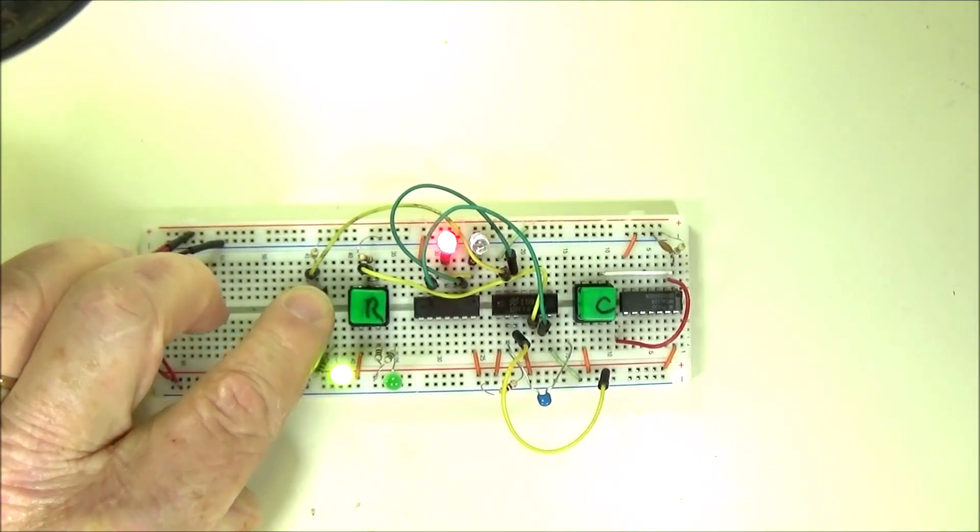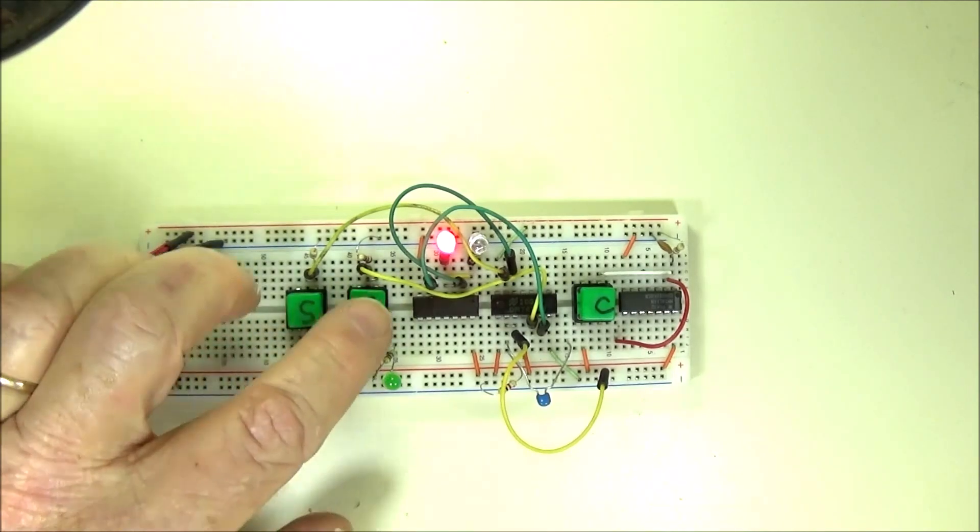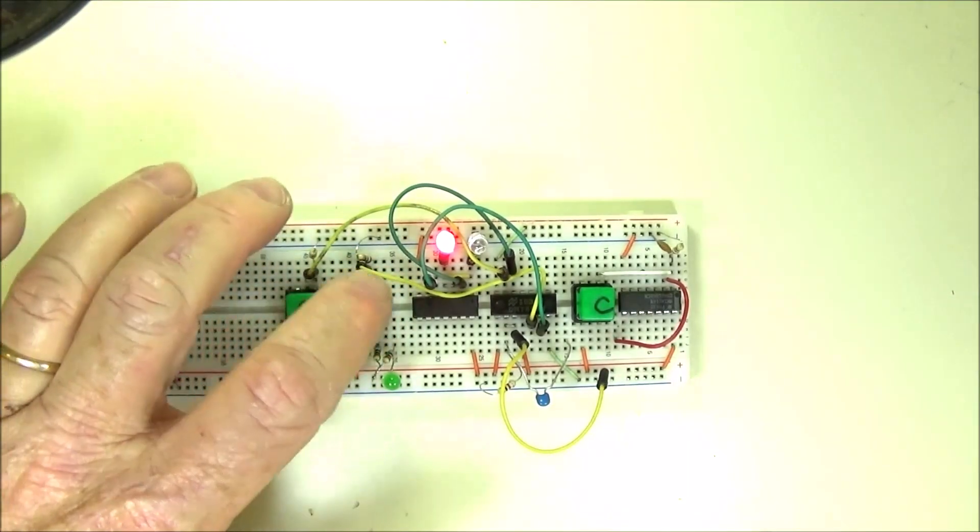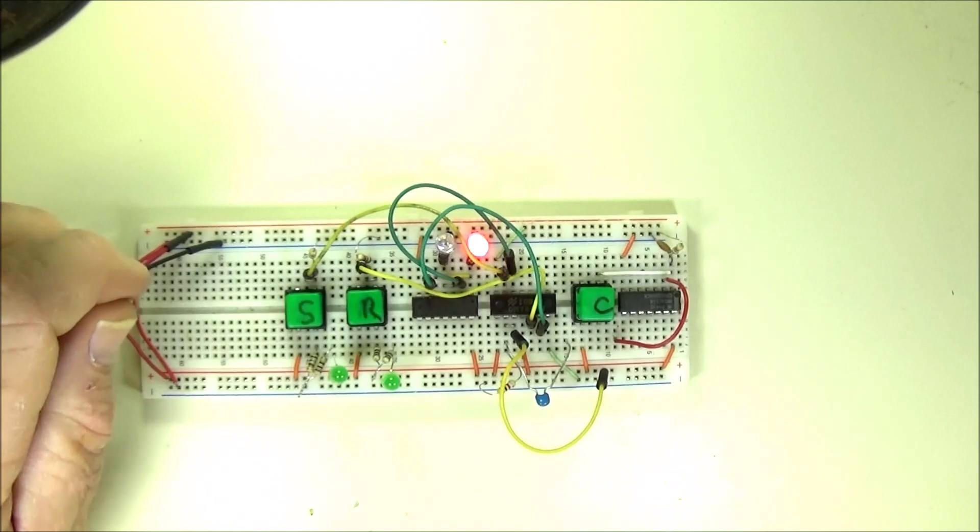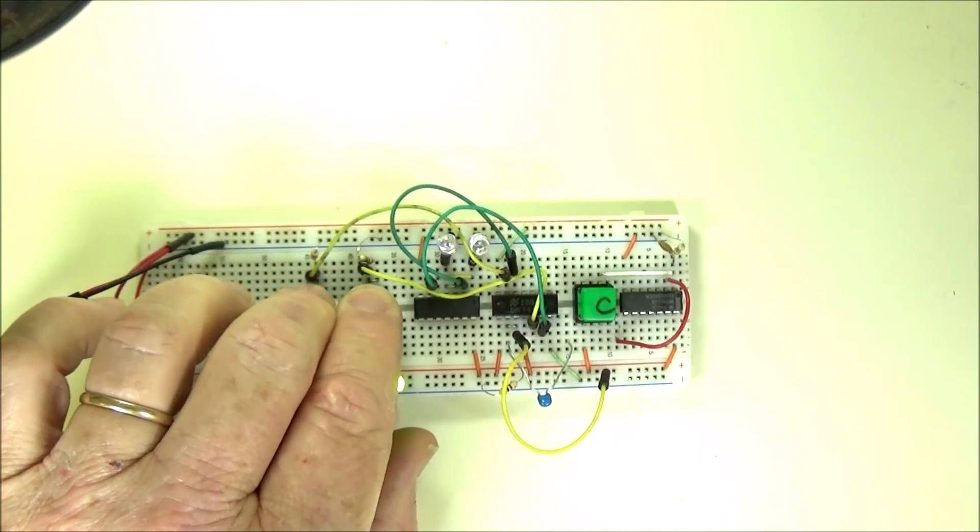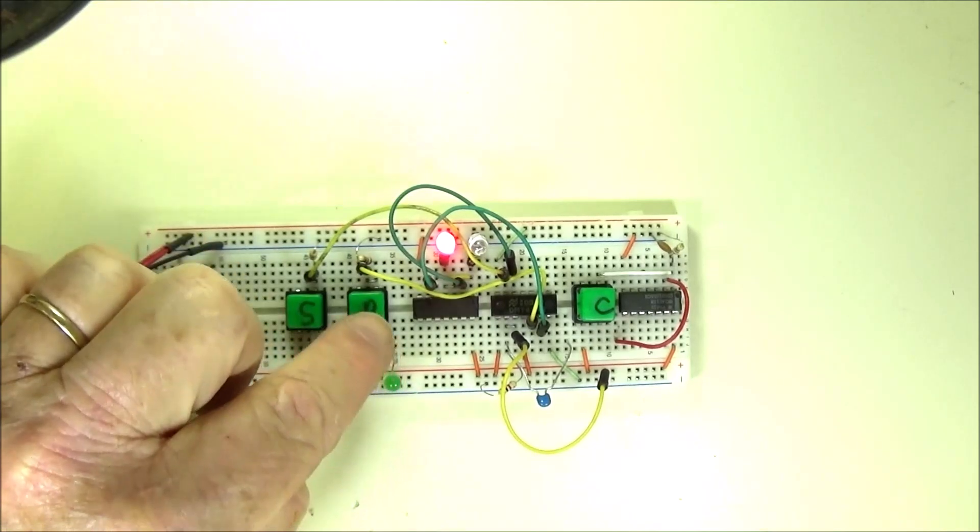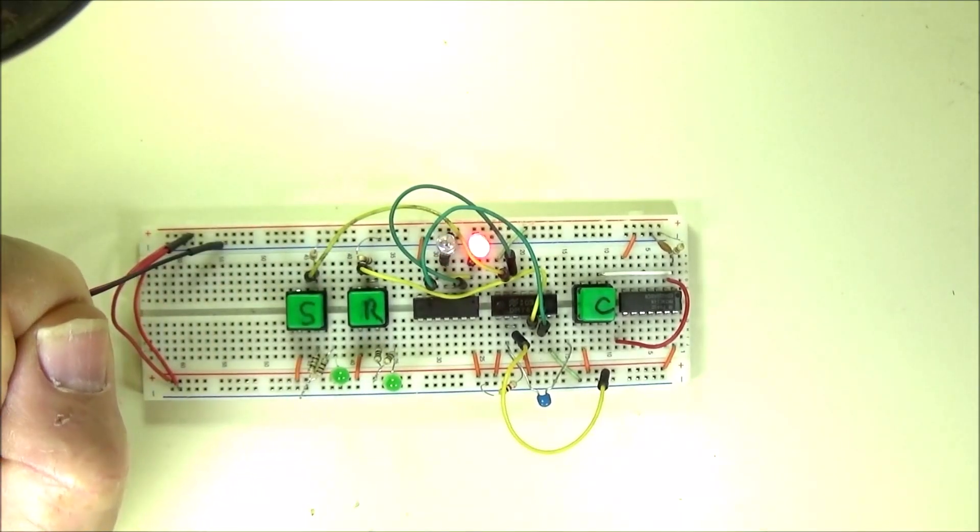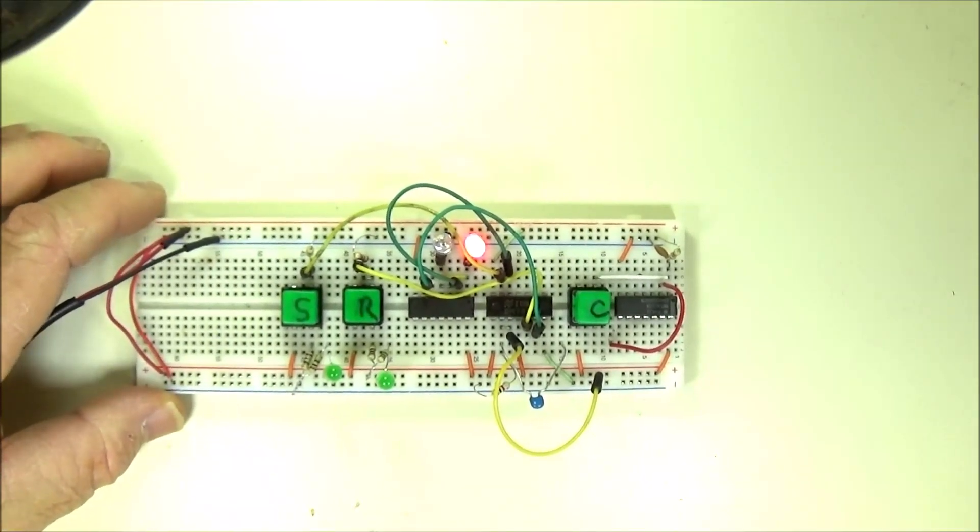Let's just start with what is an SR latch. Very simply, if I press the set switch S, the set or Q LED comes on. If I then hit the reset, the reset LED comes on and the set LED goes off. In other words, both LEDs cannot be on at the same time. If I attempt to press both at the same time, they both go off. So set sets the Q output high, reset sets the not Q output high. Okay, that is our SR latch.